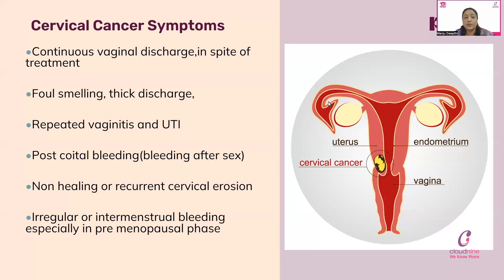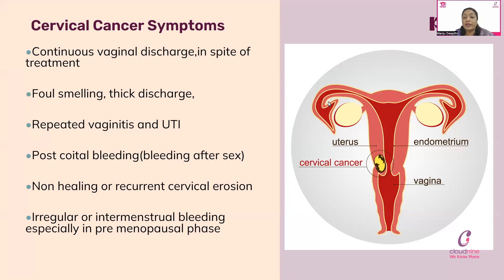The symptoms one can experience if HPV infection has progressed to cervical cancer include: continuous vaginal discharge with foul smell despite treatment, repeated vaginitis and urinary tract infection, post-coital bleeding — bleeding after sex — which is one of the commonest symptoms seen in the OPD, non-healing or recurrent cervical erosion — which are ulcers on the mouth of the uterus — and irregular or intermenstrual bleeding, especially in the premenopausal phase.